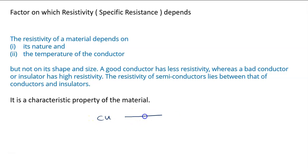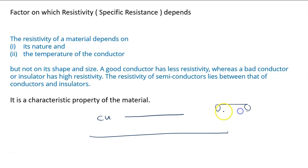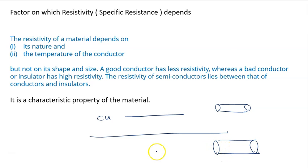If it is a copper wire, it doesn't matter what length or cross-section area you use — whether you increase the length or increase the area of cross-section, the resistivity will remain constant. Resistivity is a property of the material, so it is fixed.